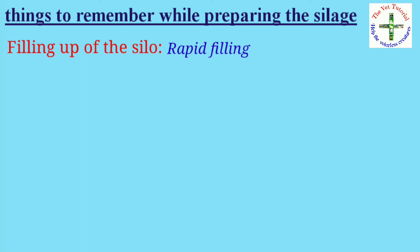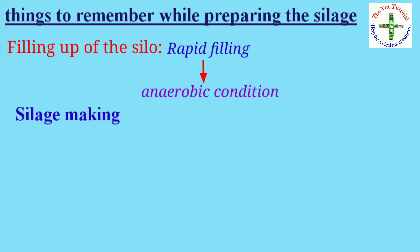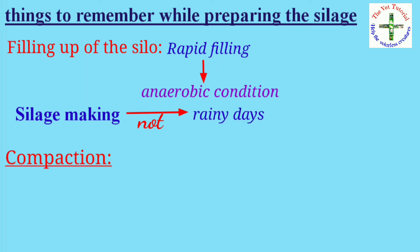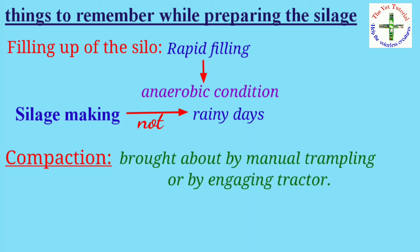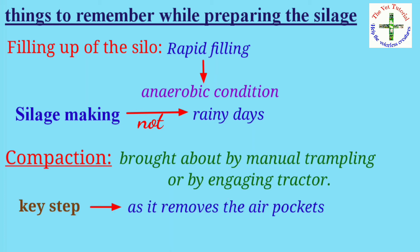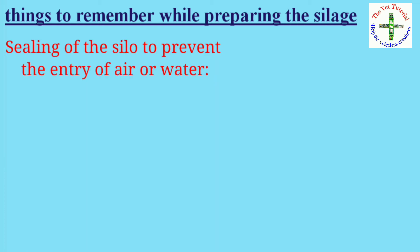Filling up the silo: rapid filling of the silo is desirable for anaerobic conditions, and silage making should not be undertaken during rainy days. Compaction of chaffed material can be brought about by manual trampling or by engaging a tractor. Compaction is the key step in silage as it removes air pockets to promote anaerobic fermentation.